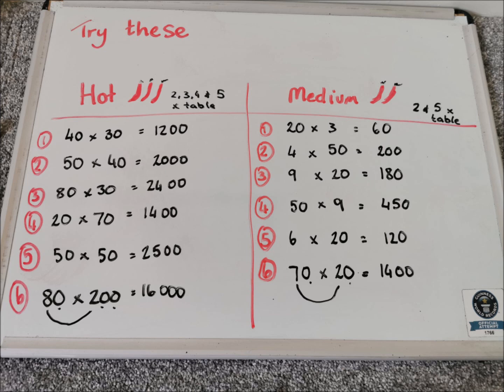And the last one was another trickier one there with two two-digit numbers there. So hopefully you managed to work that one out. So 7 times 2 is 14. Add two zeros on. It is 1,400. So hopefully that has made sense for you.